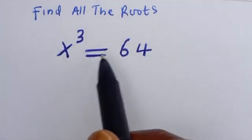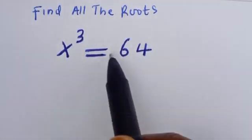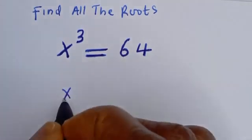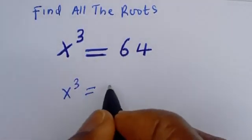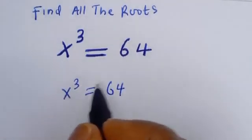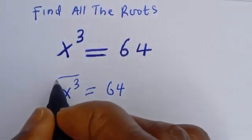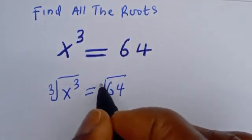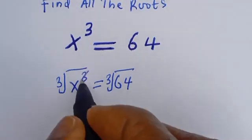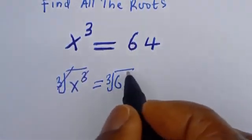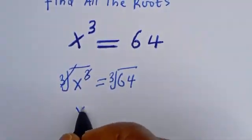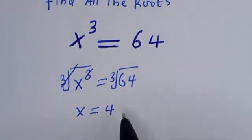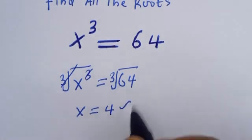How to find all the roots of this cubic equation. If s to the power of 3 is equal to 64, let's take the cube root of both sides: cube root of s³ equals cube root of 64. These cancel, giving s equal to 4. But is s equal to 4 the only solution of this equation? No.